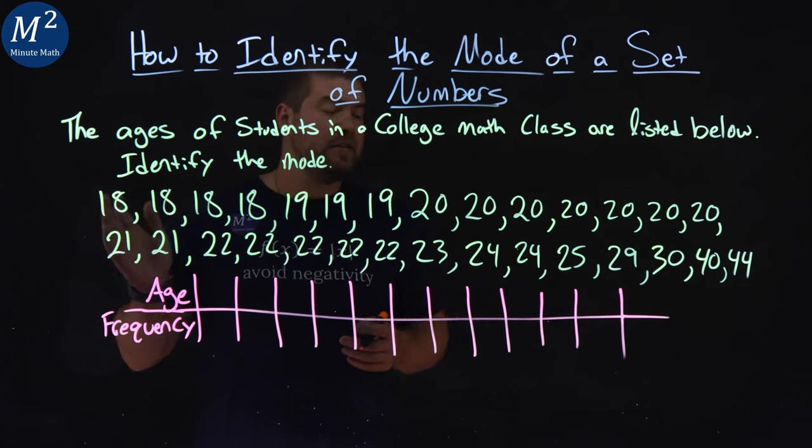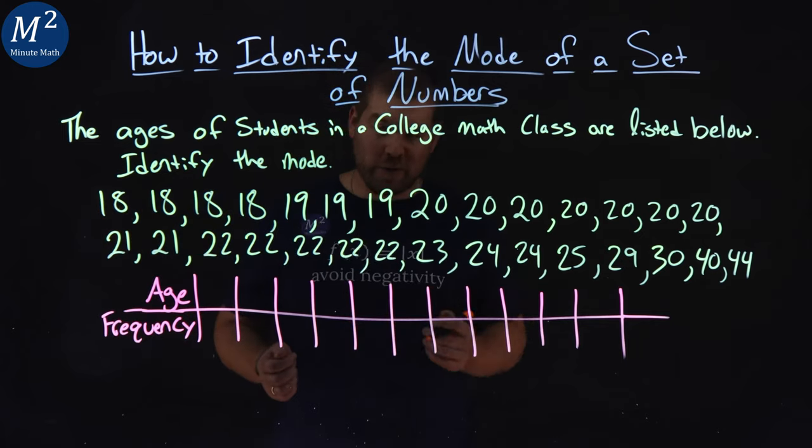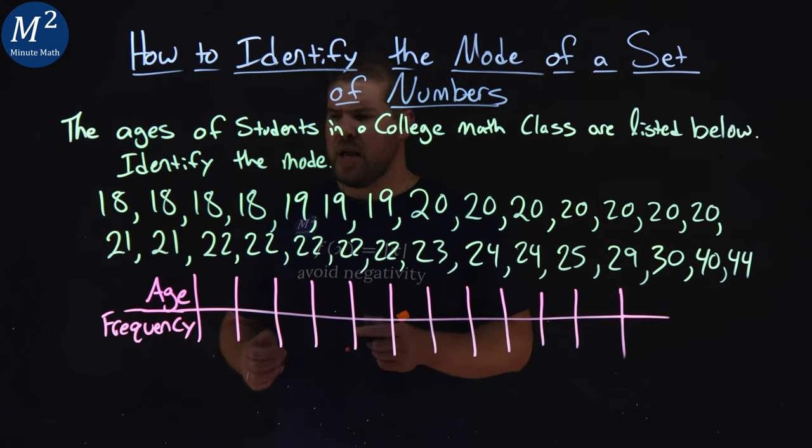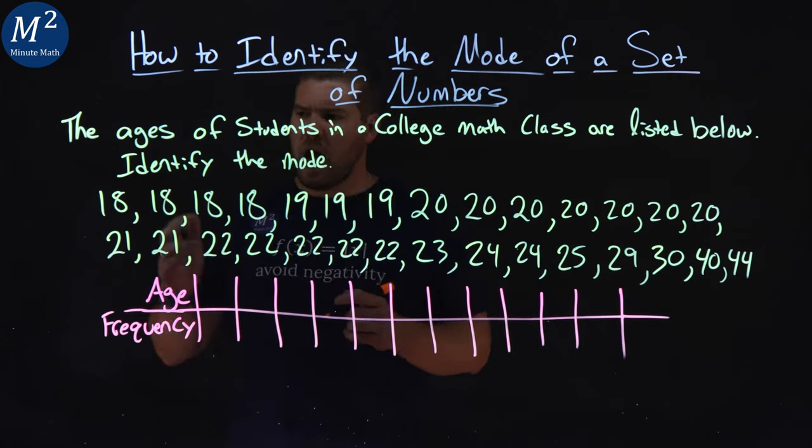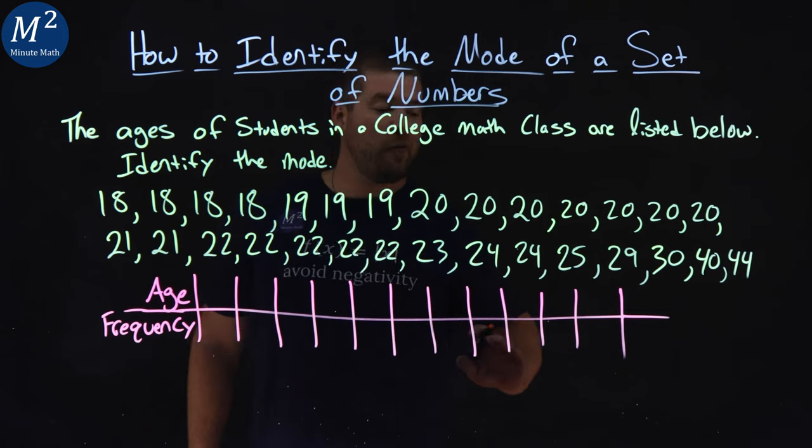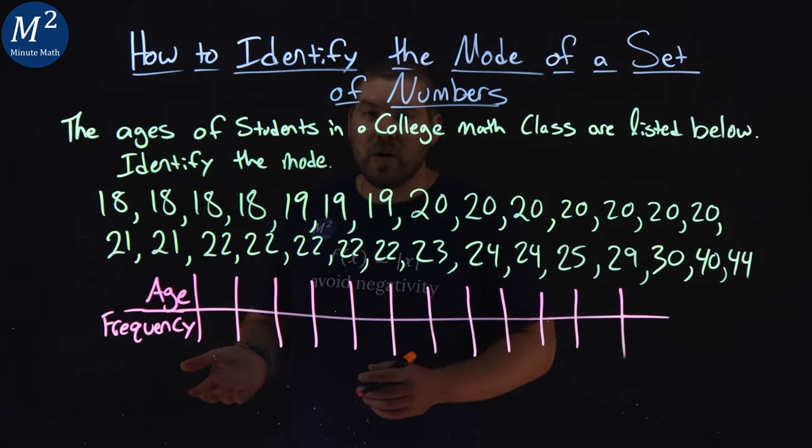So what we have is, luckily, it's in least to greatest order for us. That makes it easier. And so what we're going to do is make a little table here to determine this. I'm going to write each one of our ages, and then determine how often that age happens with the frequency of each age.